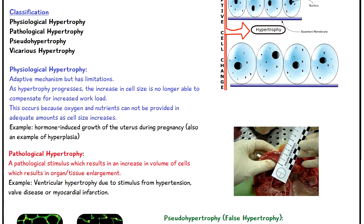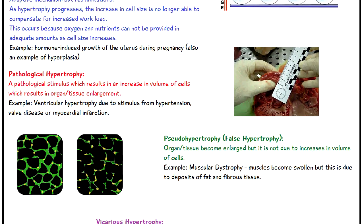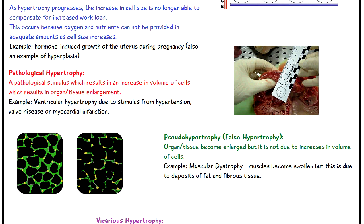The next type is pathological hypertrophy, where some form of disease or pathological stimulus causes the cells to increase in volume, resulting in the enlargement of the organ or tissue. An example is ventricular hypertrophy due to hypertension or high blood pressure, some kind of valve disease in the heart, or a heart attack — myocardial infarction. The diagram on the right shows a form of cardiomyopathy, and you can see the walls of the heart, or the myocardium, have increased in thickness.